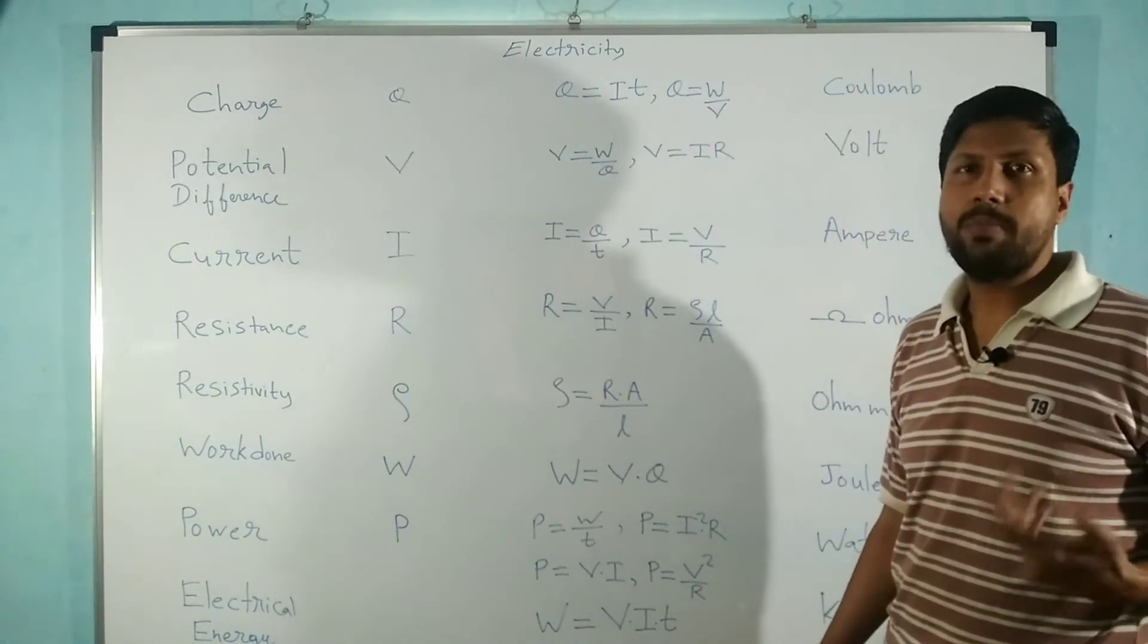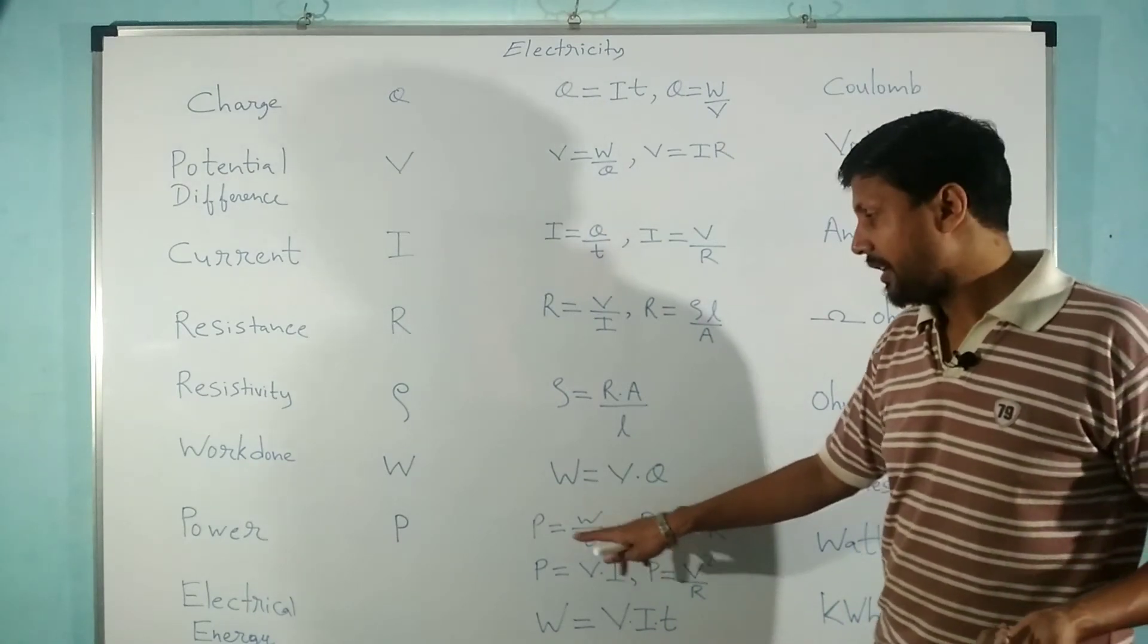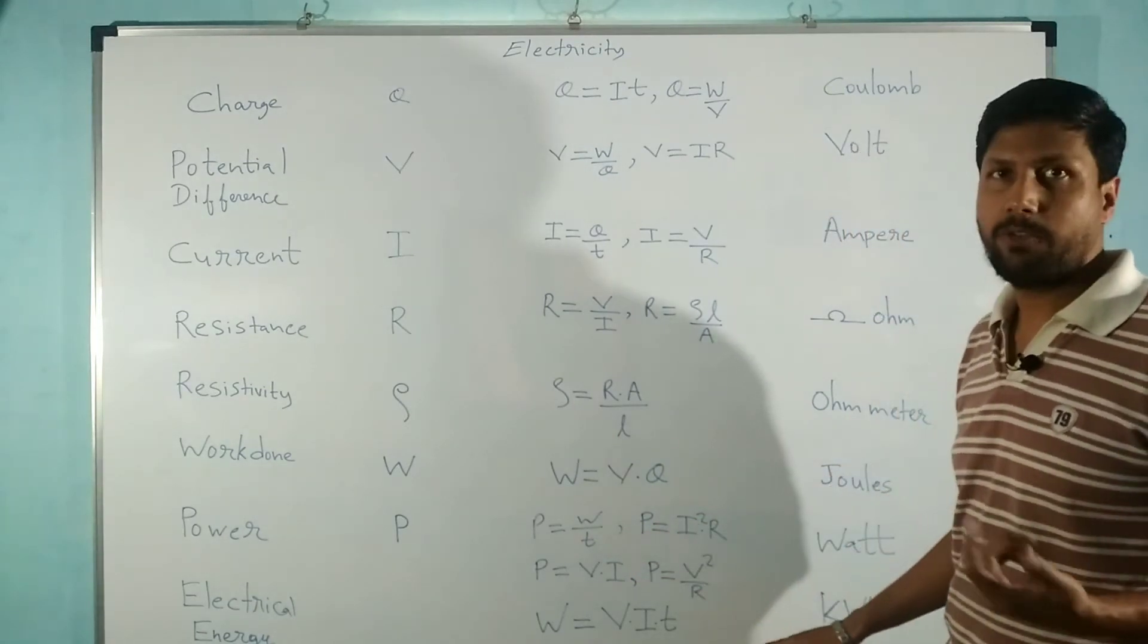P equals W by T is the original formula by definition, while the others are derived from different formulas including Ohm's law.